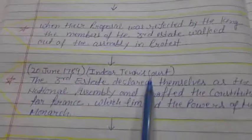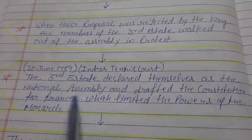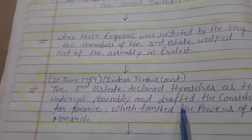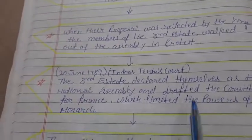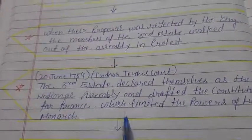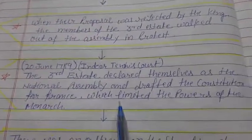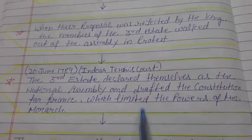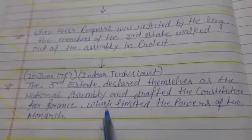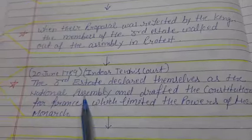They came together and the members declared themselves the National Assembly, and they drafted a constitution for France which limited the power of the monarch. Louis XVI's powers were to be limited. They formed the National Assembly and made their own constitution.